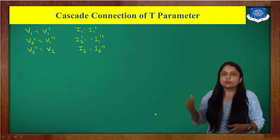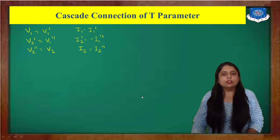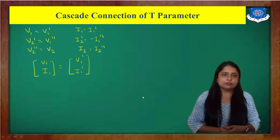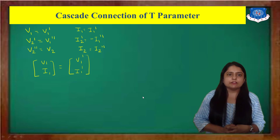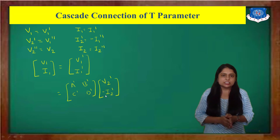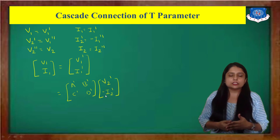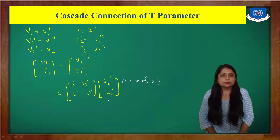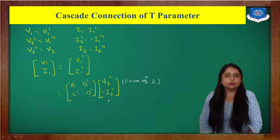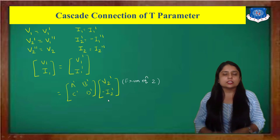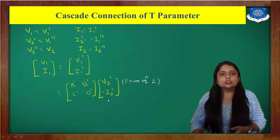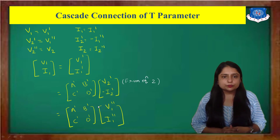From our diagram, we know that V1 and I1 can be expressed using the N-dash parameters. We substitute V1-dash and I1-dash — which equal V1 and I1 — into the N-dash equation. We know V1-dash and I1-dash equal [A-dash, B-dash; C-dash, D-dash] × [V2-dash, -I2-dash], from equation 2. Now, can we substitute V2-dash and -I2-dash? Yes — V2-dash equals V1-double-dash and I2-dash equals I1-double-dash.